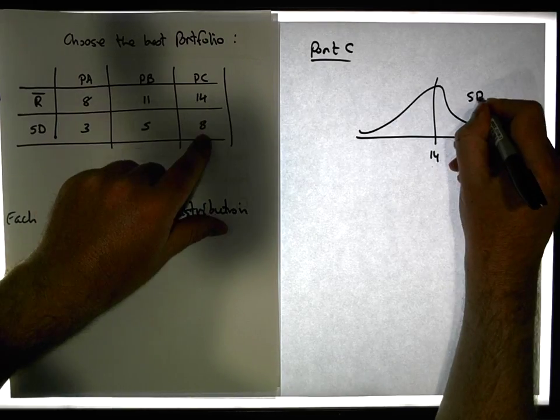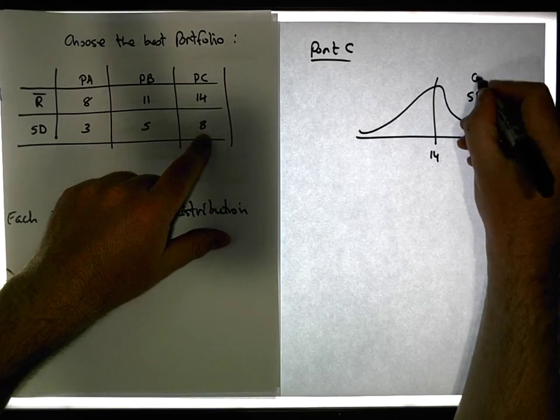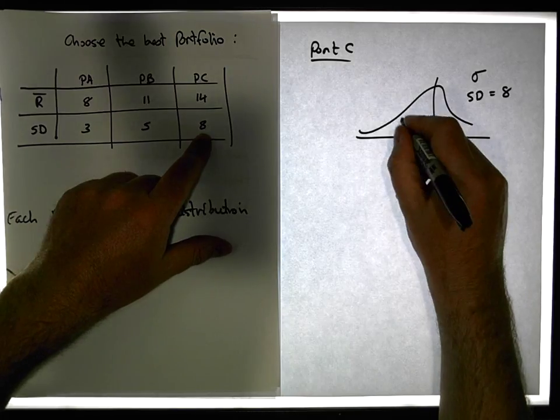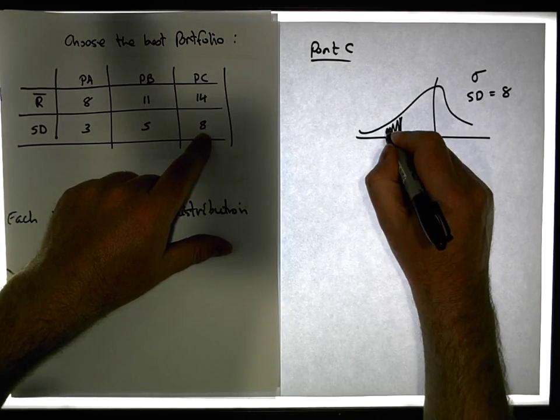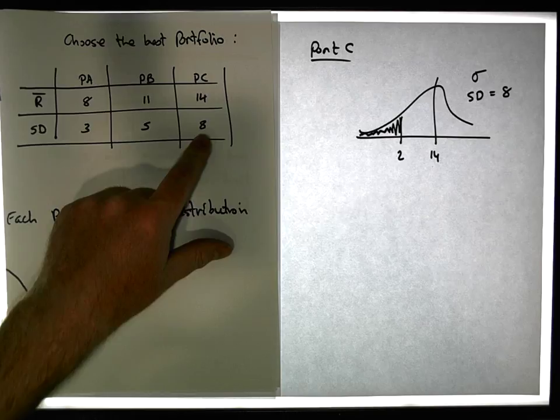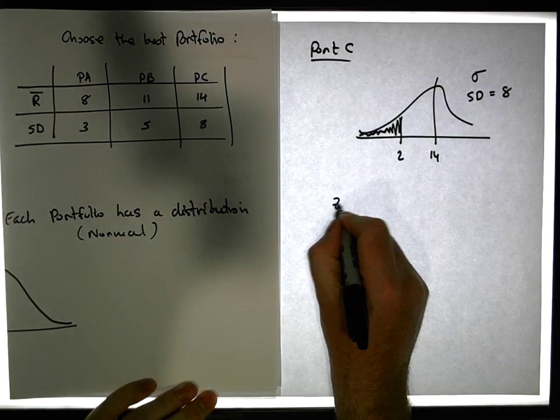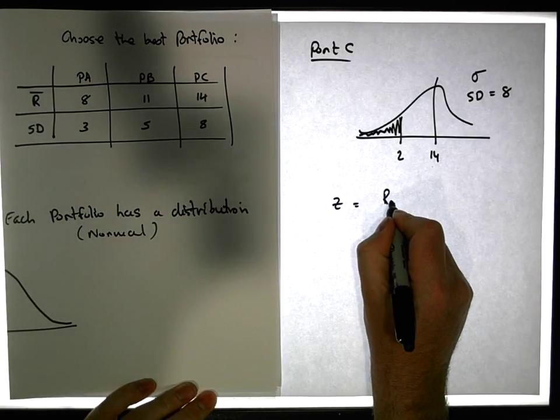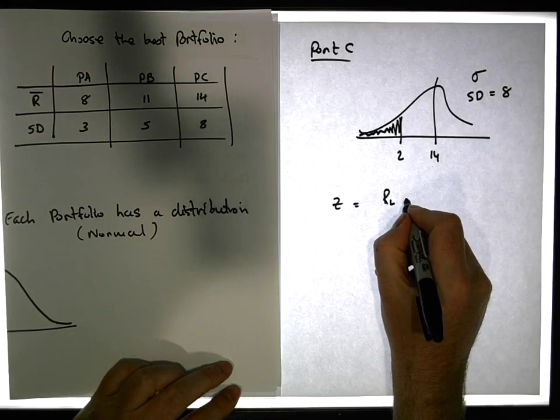So its expected return is 14% and standard deviation is equal to 8. And we want to know what's the probability of falling below 2%? So once again we need to standardize, and z is equal to the risk level, this lower threshold we're willing to accept, minus the return of the portfolio divided by the standard deviation of the portfolio.